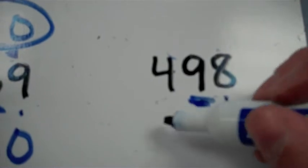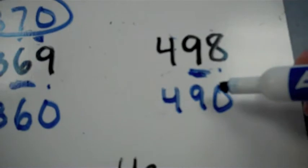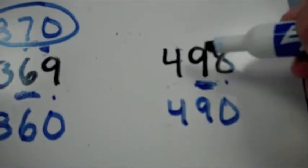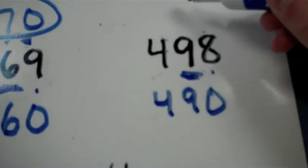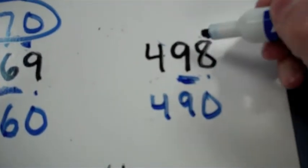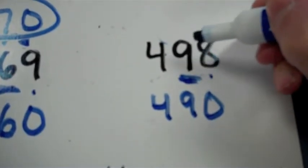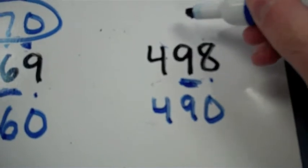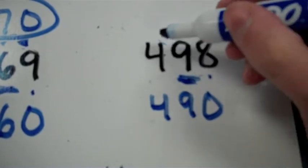The closest tens is either 490, just to add a 0 at the end, or the next 10 up after 9 tens would be 410. Oh, that doesn't work. 10 tens makes an extra 100. So instead of 400, I'm going to put 500 up here.